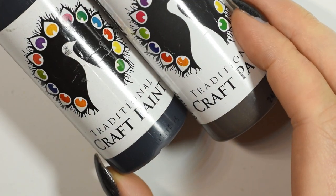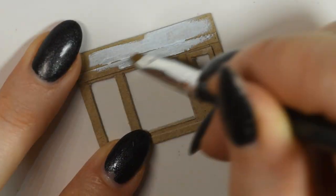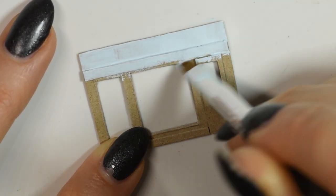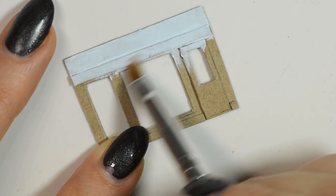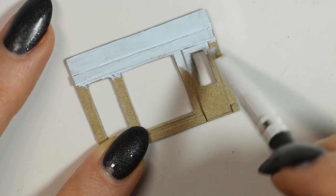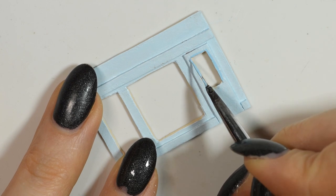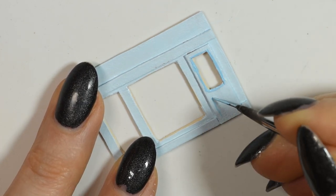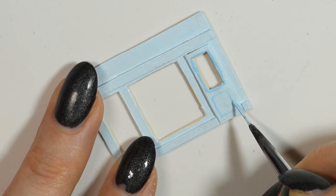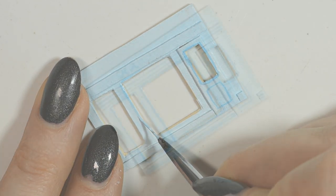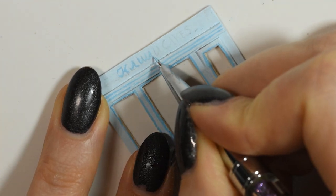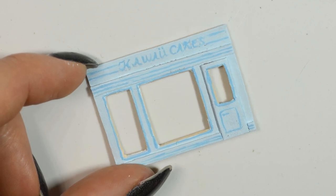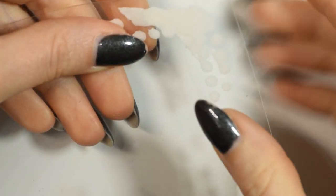Then I used acrylic paint to paint it. After laying down a base color I went in with a slightly darker shade to add some detail. And here's the front so far. Then I used some recycled plastic from packaging to add windows.